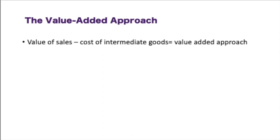The value-added approach is the value of sales minus the cost of intermediate goods, which equals the value-added approach. For example, this would be like the cost of lumber minus the cost of the bed frame — if we were making bed frames, the cost of the lumber minus the cost of the bed frame sold would equal the GDP contribution.